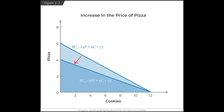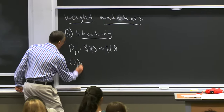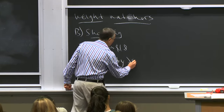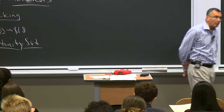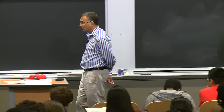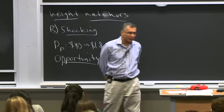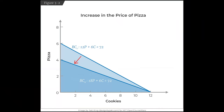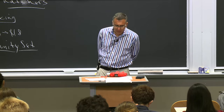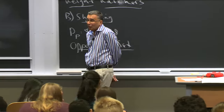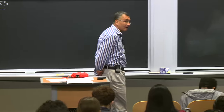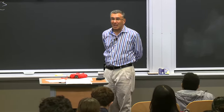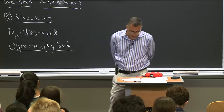Your opportunity set is the set of choices available to you given your income and market prices. Your opportunity set initially was the black dots plus the red dots. Now it has shrunk to just the black dots. Given your income, you can now get less stuff — same amount of cookies but less pizza. You are worse off even though your parents are still sending you the same check, because you can now buy less pizza with it.